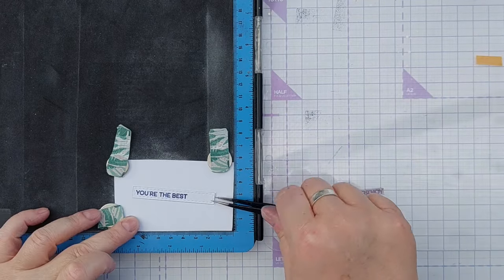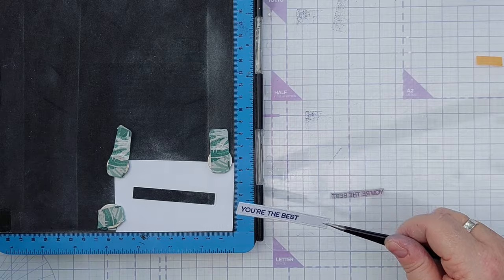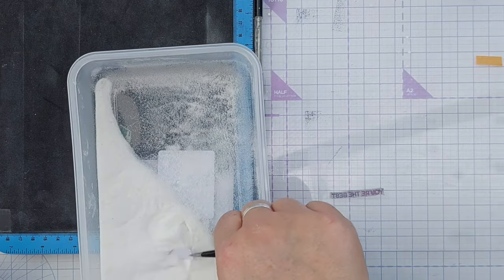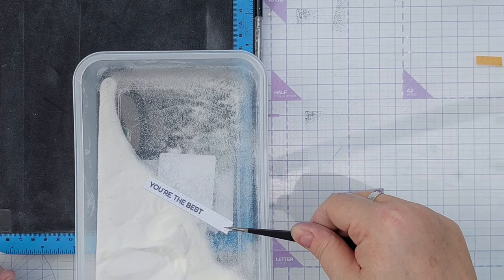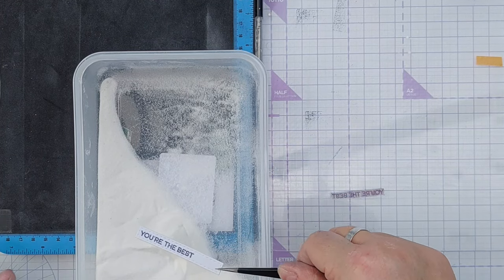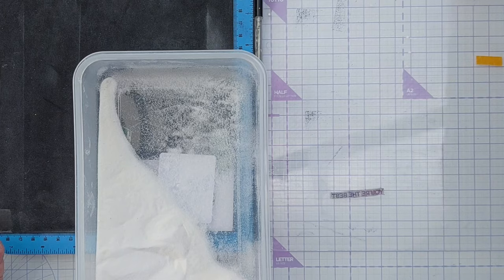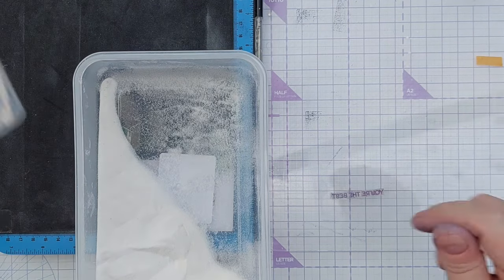For this one I'm going to stamp it in chip sapphire again because distress oxides contain pigment they do stay wet a bit longer than dye inks so they will grab onto embossing powder. So I've dipped that in clear embossing powder so I should get a chipped sapphire glossy sentiment.